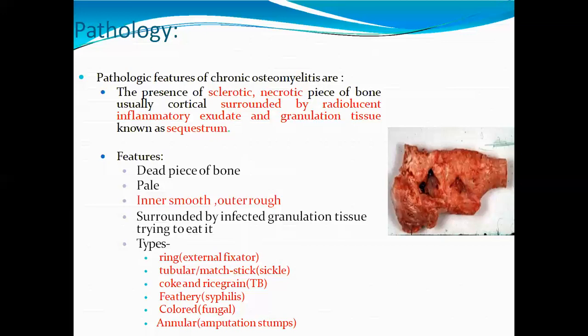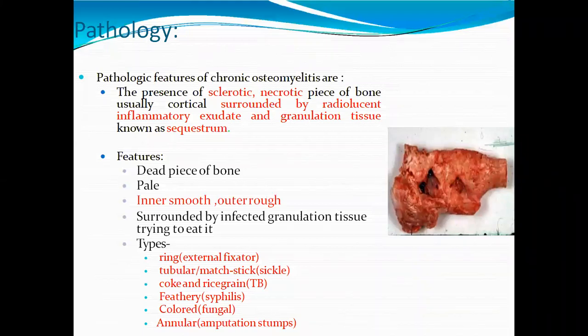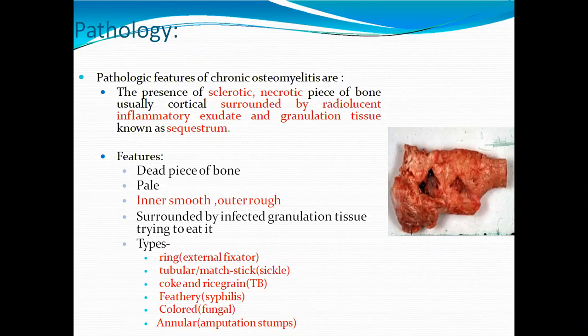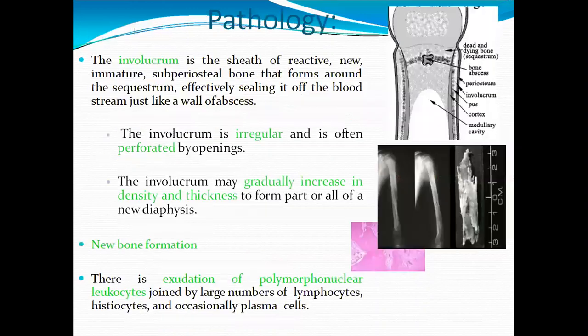The types of sequestrum include: ring or external fixation type, tubular or match-tubular type, sickle-shaped type, and also cork, rice grain, syphilis, and annular types. These are the pathological forms of sequestrum.